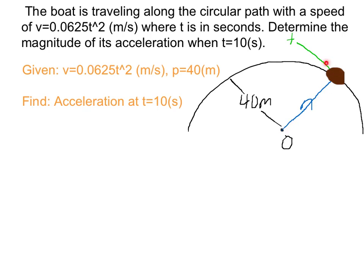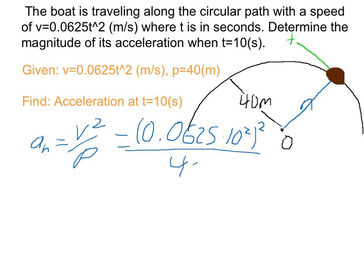We're going to split it up into the normal and tangential component. Let's first find the normal component. So a sub n equals v squared over rho, which is going to equal 0.0625 times at 10 seconds t squared, and the whole v squared over rho, which is 40 meters. This is meters per second squared. You end up with 0.9766 meters per second squared.